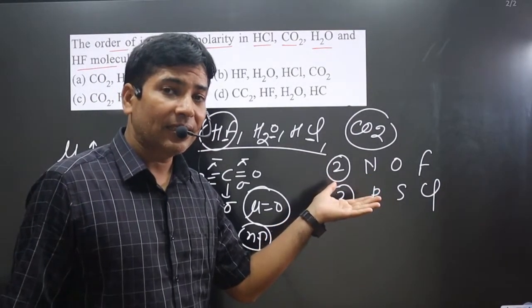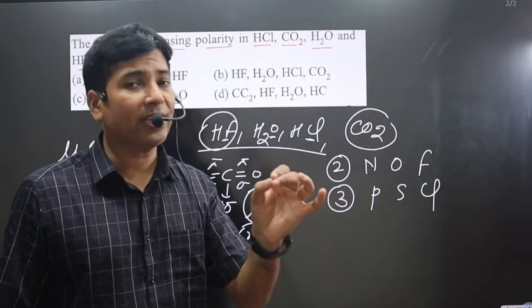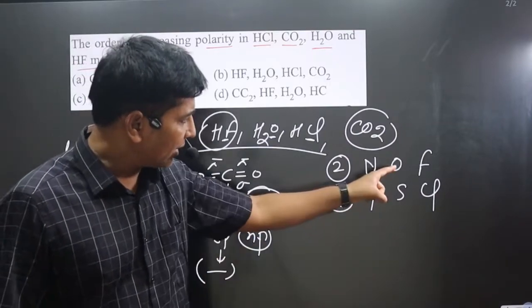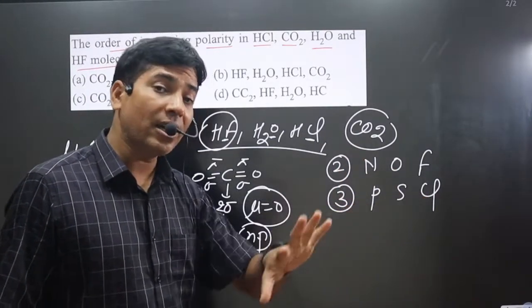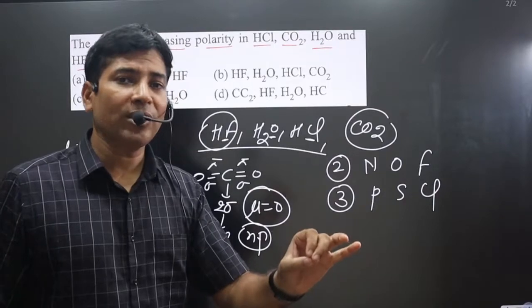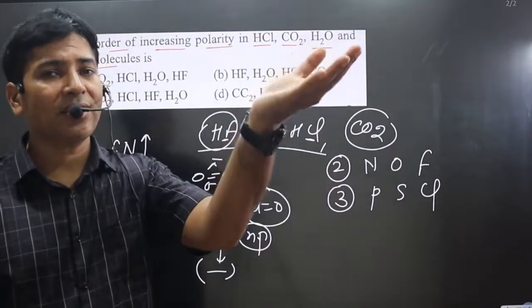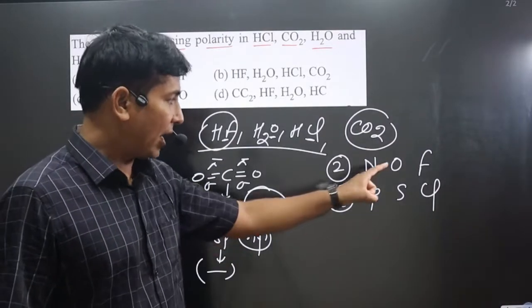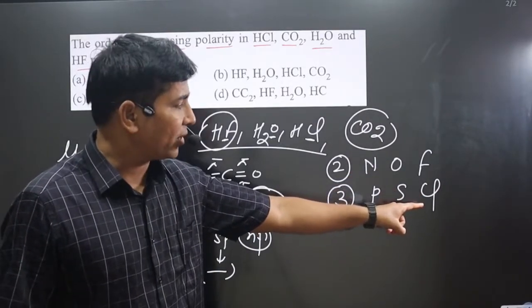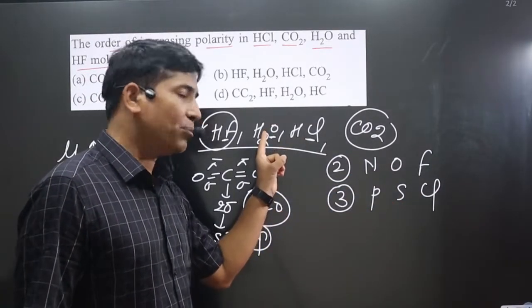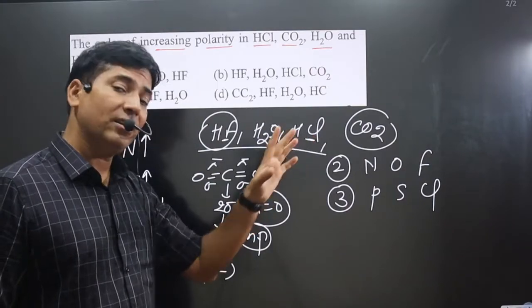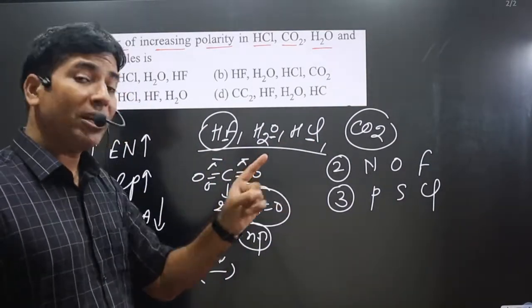Smaller the size, higher the electronegativity, because electronegativity is directly proportional to nuclear charge. Oxygen is in the second period and chlorine is in the third period, meaning chlorine has a larger size than oxygen. Since electronegativity is inversely proportional to size, oxygen is more electronegative than chlorine, so H2O is more polar than HCl.